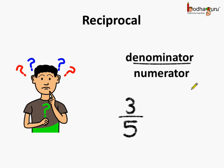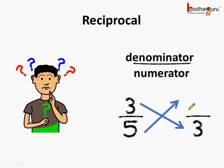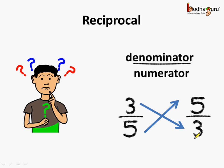Consider the fraction 3 by 5. What is the reciprocal of 3 by 5? See, 3 goes here and it becomes the denominator — the numerator is becoming the denominator. And what about 5? 5 is the denominator here; it goes and becomes the numerator. So the reciprocal of 3 by 5 is 5 by 3. Basically, the numerator and the denominator exchange their places.